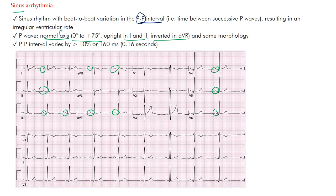Looking at a rhythm strip, you can see these P waves pretty much look the same — similar morphology. We want to ensure we're not dealing with a wandering atrial pacemaker or multifocal atrial tachycardia, so all P waves having the same morphology confirms we do have sinus rhythm here.